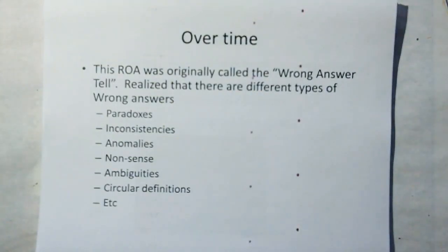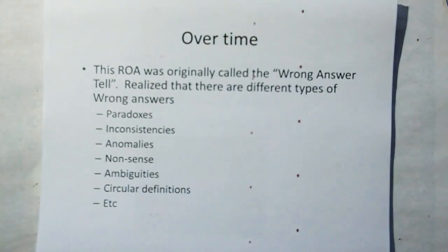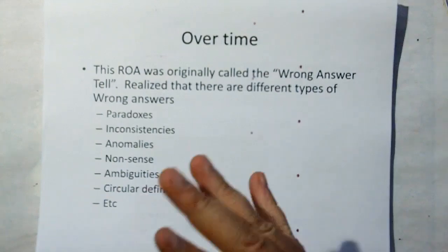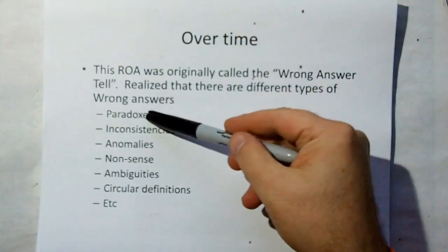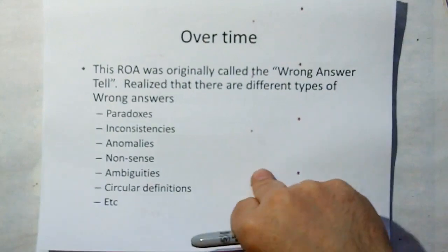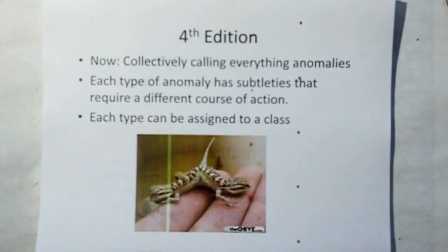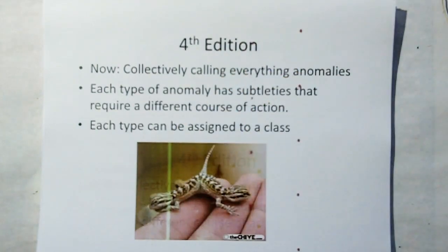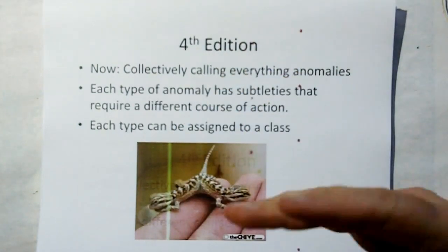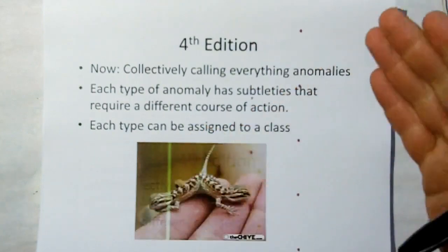This second Rule of Acquisition was originally called the Wrong Answer Tell. But then I realized that there are different kinds of wrong answers that we're all calling anomalies. Different types of wrong answers or anomalies can be grouped into classes, and each class can have a slightly different way in which you would handle the anomaly.